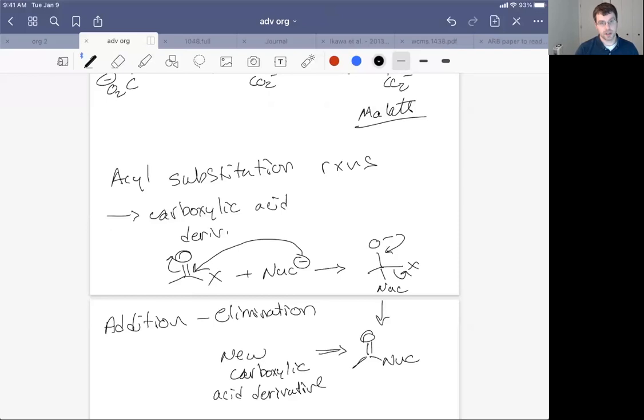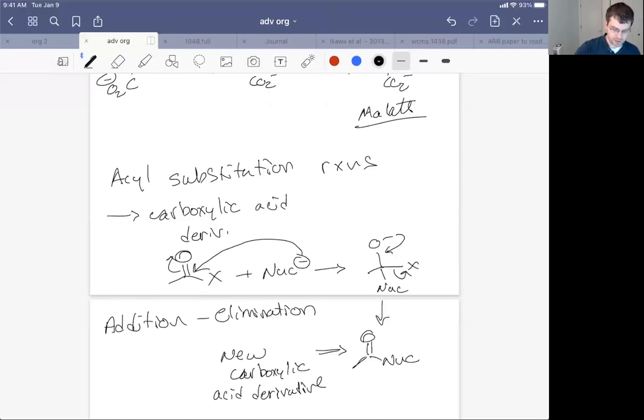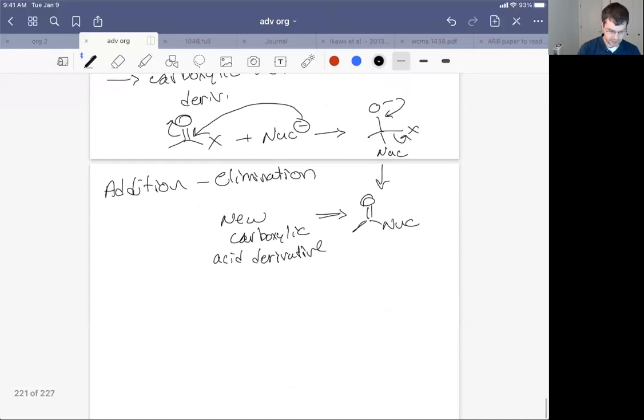So we've talked about this in organic two when we talked about making esters from acid chlorides and anhydrides and that sort of thing. But in biology, we're going to use different types of carboxylic acid derivatives. I guess the amide is a big one, but when we talked about that in organic two, it was in the context of polypeptides anyway.